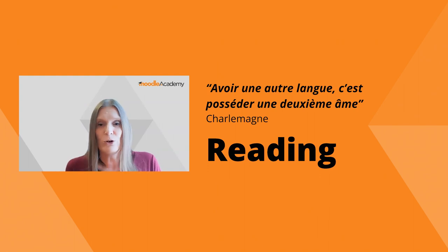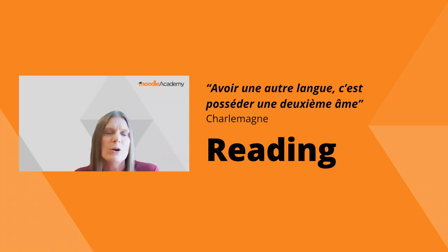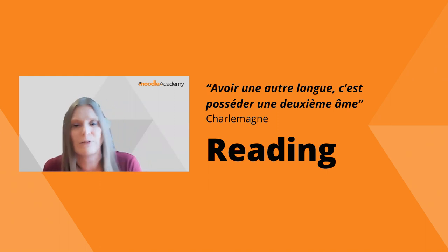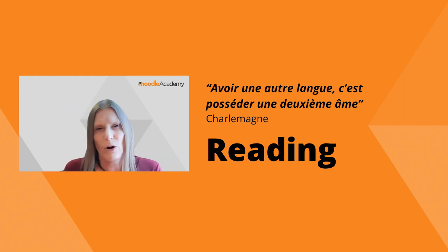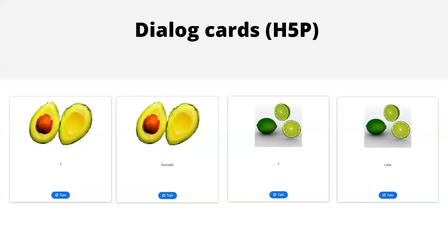Now we're going to look at reading, going from the simplest working towards higher levels — individual words, then sentences, then more extended passages and paragraphs. If you just want students to explore and identify individual words, think about H5P Dialogue Cards, which are like flash cards: you can have a picture on one side, flip it over, and they recognize or read the word on the other side.